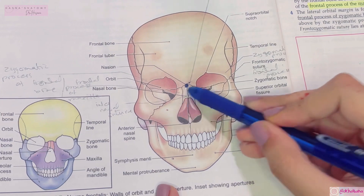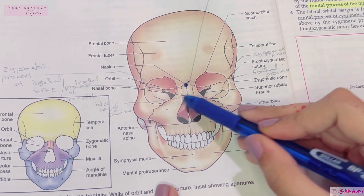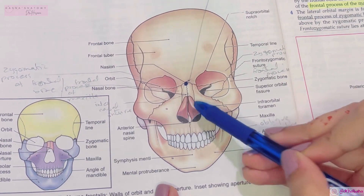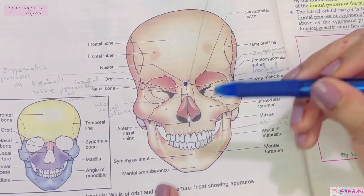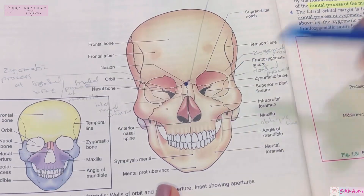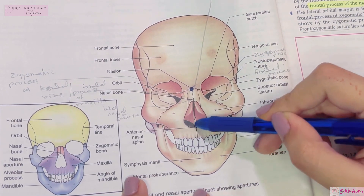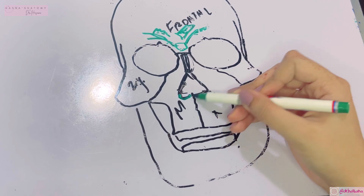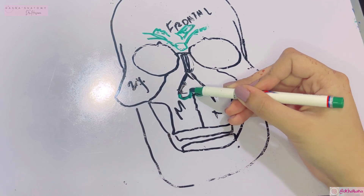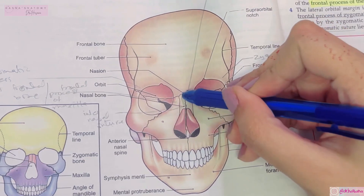The nasal aperture is shaped like a triangle — wider below than above. The upper part is formed by the two nasal bones, and on either side the aperture is bounded by the nasal notches of the maxilla bones. The right and left nasal notches meet in the midline at the lower part of the aperture, forming a spine-like projection called the anterior nasal spine.